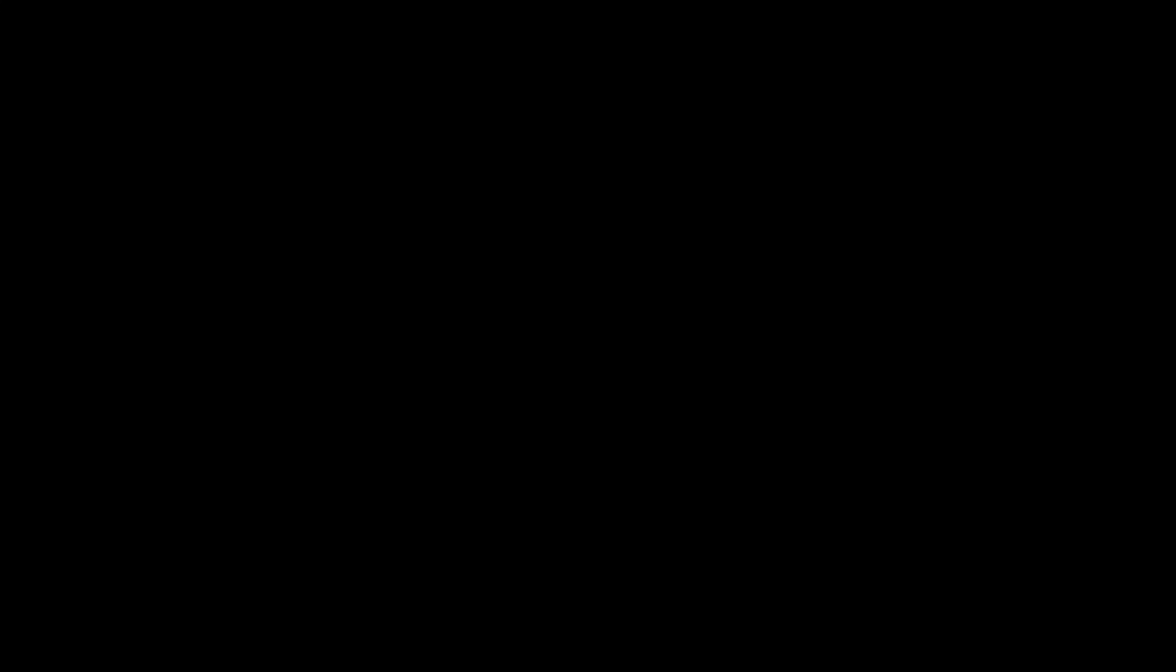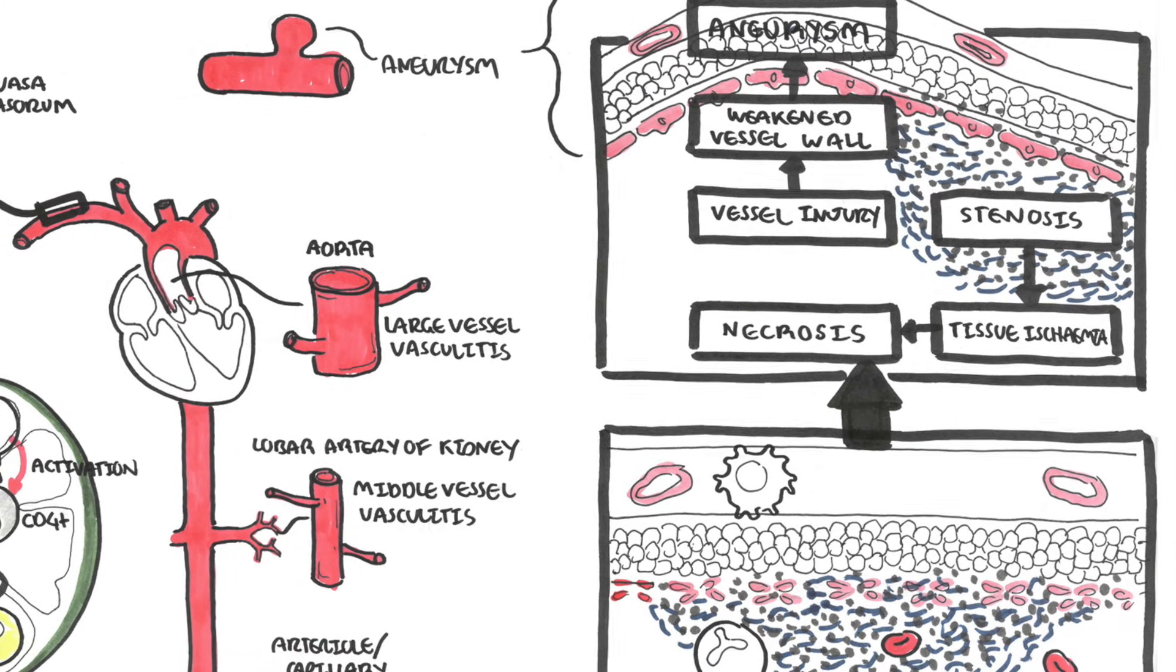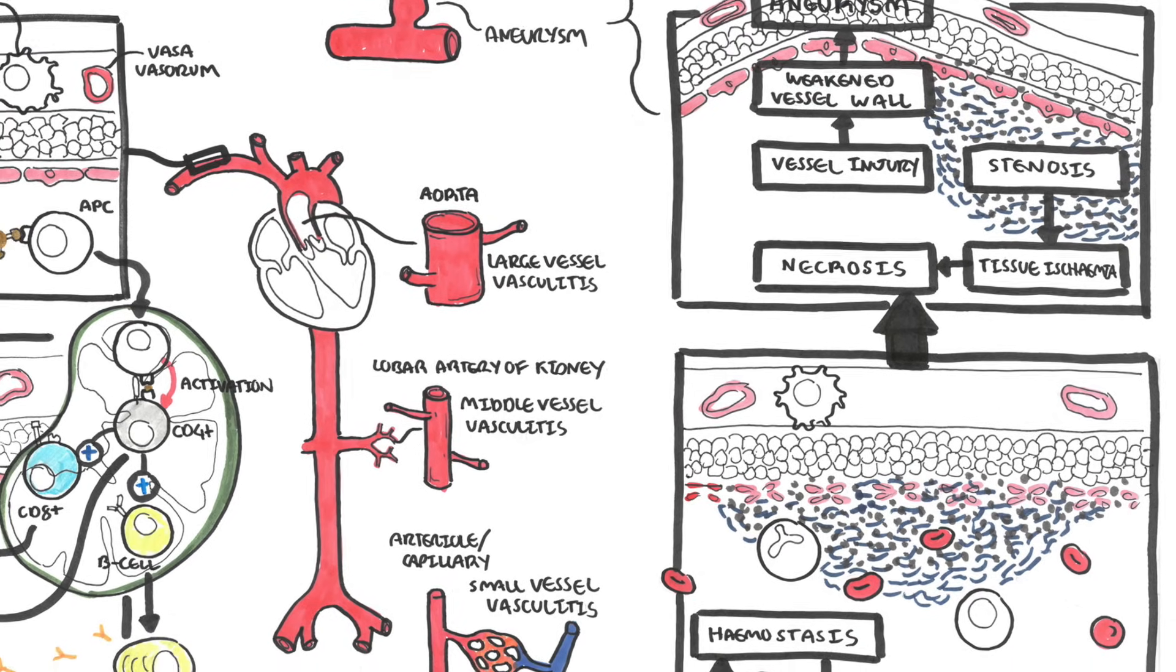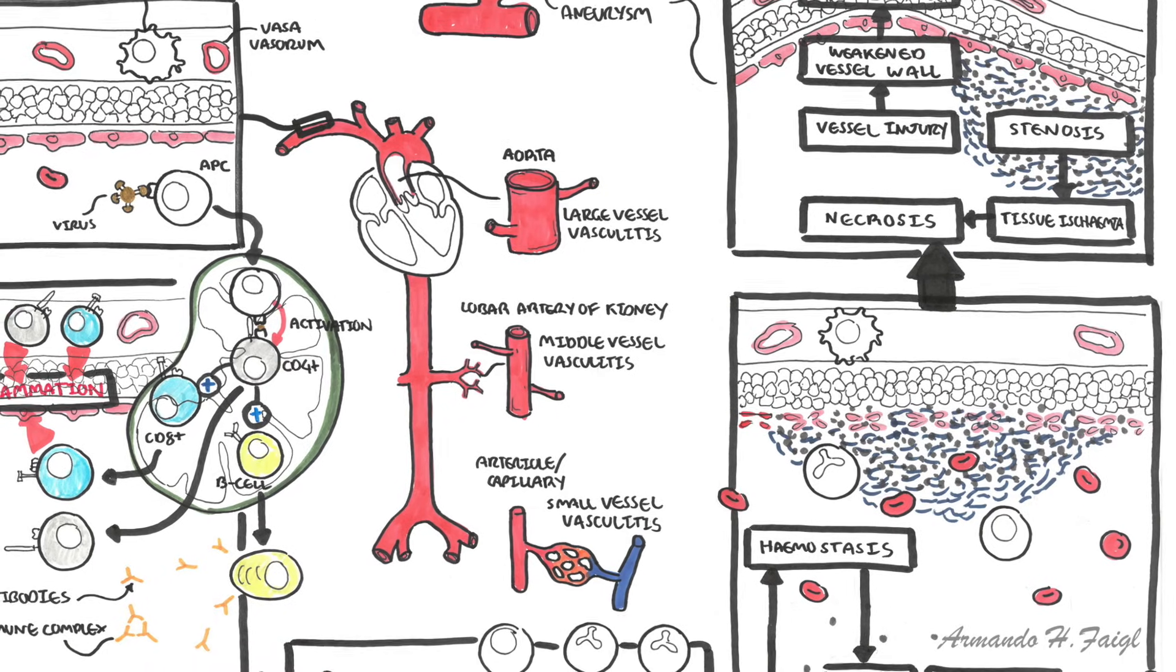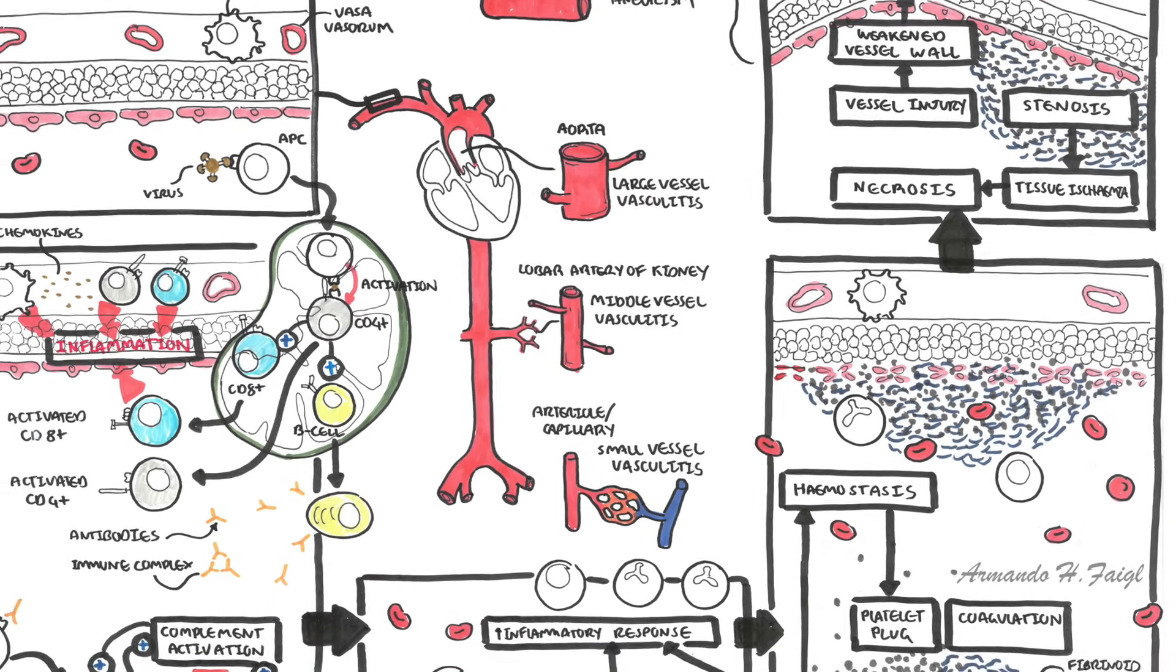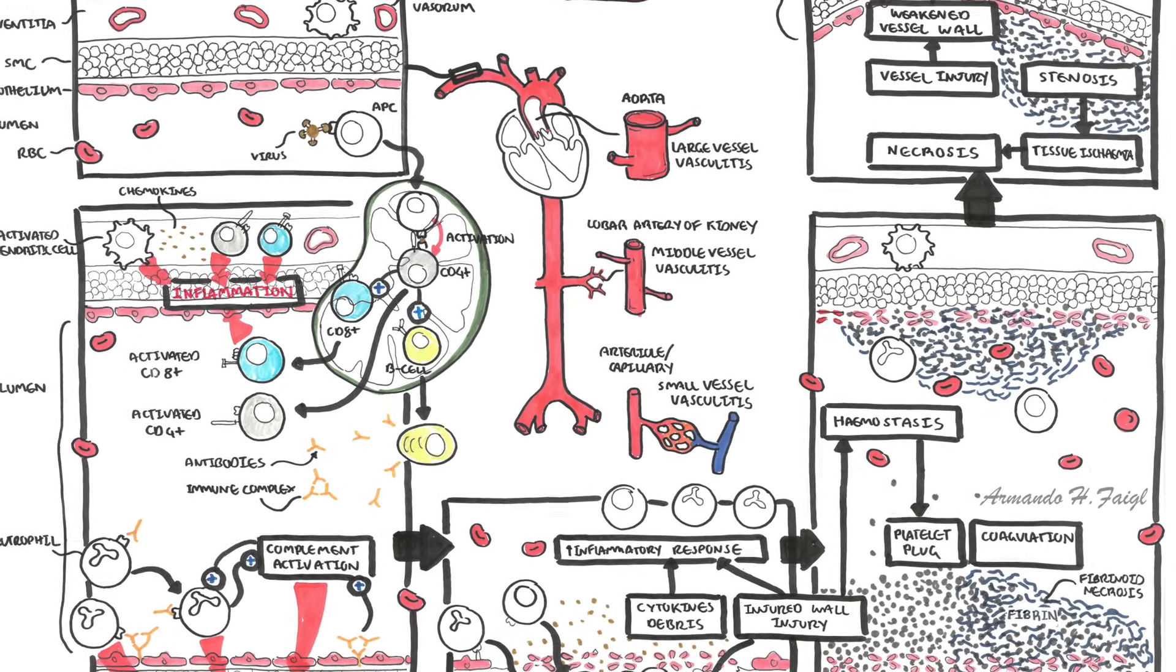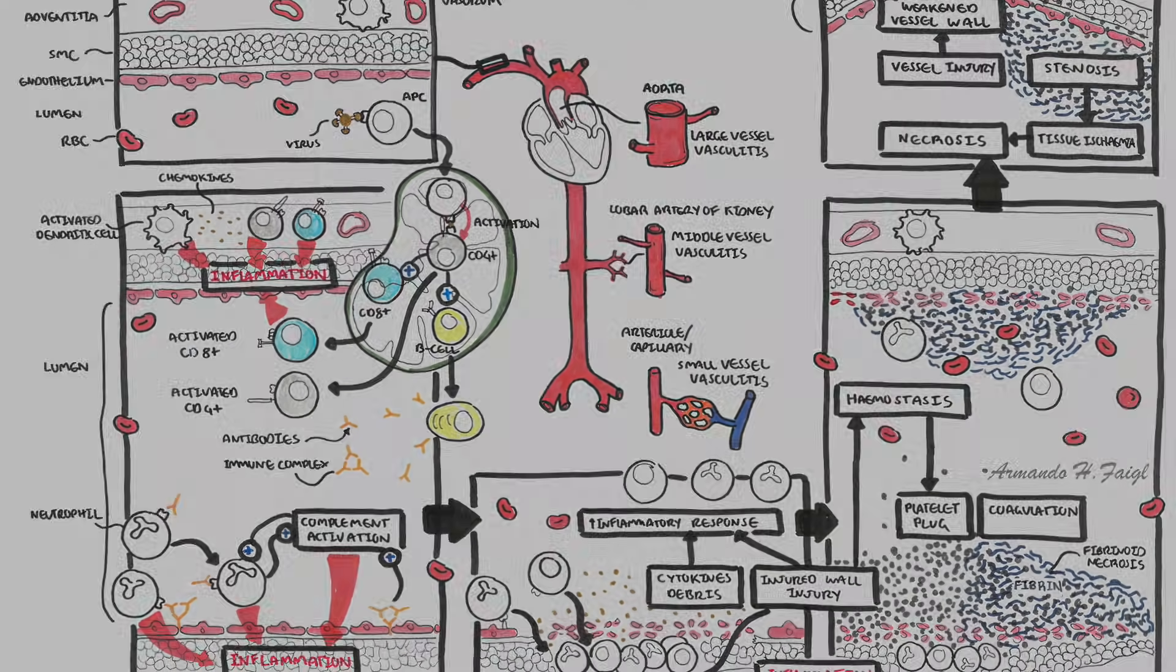In summary, vasculitis is inflammation of the blood vessel. The primary vasculitis are classified by the size of the blood vessel affected, although there is definitely overlap. These include small, medium, and large vessel vasculitis. The pathophysiology is thought to be primarily immune-mediated through a variety of mechanisms. Complications of vasculitis include organ dysfunction through reduction in blood flow from lumen narrowing and aneurysm formation from weakened blood vessels.